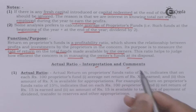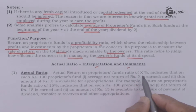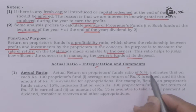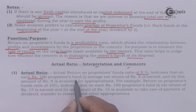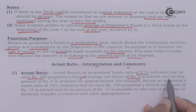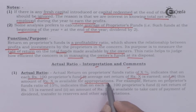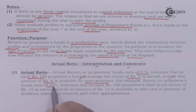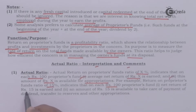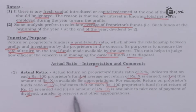The actual return on proprietors fund ratio of X percent indicates that on each rupees 100 of proprietors fund, an average net return of rupees X is earned, and this amount is available for appropriation. For example, a return on proprietors fund of 15 percent indicates that on each rupees 100 of proprietors fund, a net return of rupees 15 is earned, and that amount is available to take care of payment of dividend, transfer to reserves, and other appropriations.